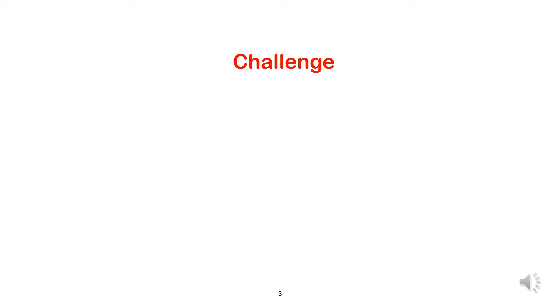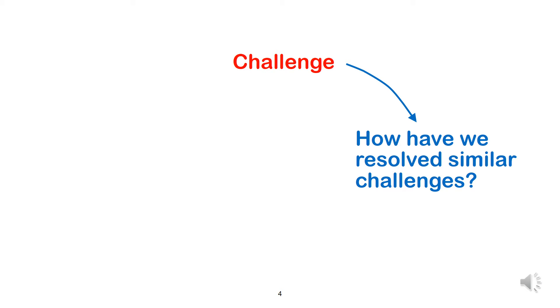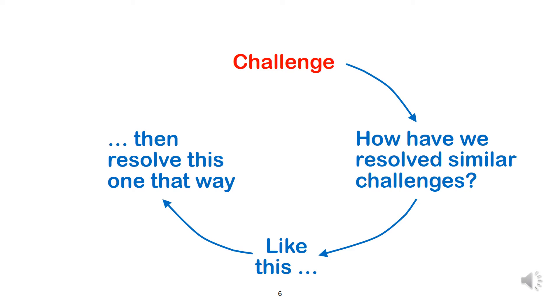This habitual and confining tendency begins when we're faced with a challenge, issue, problem, or opportunity. Under control of the Einstein effect, we immediately ask how we have resolved similar challenges in the past. We quickly recall a similar challenge and how we resolved it, and then we decide to resolve this one the same way.